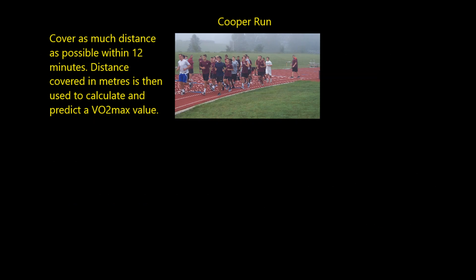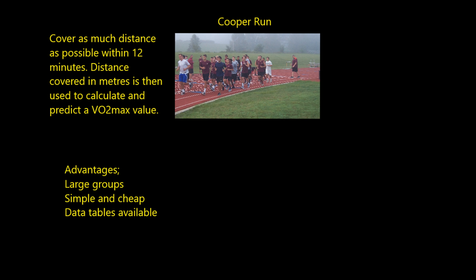Another method — one you're all probably more familiar with — is the Cooper 12-minute run. Often done on a 400-metre athletics track, cones are placed at regular intervals so you can track your distance covered, because you're going to try to cover as much distance as possible in 12 minutes. The distance covered in metres is then used to calculate and predict a VO2max value for you. The big advantages are that this can be done on large groups — direct gas analysis can only do one person at a time. It's very simple and cheap; you don't even need an athletics track. Data tables are available, so you can look up your distance in metres and convert that straight to a VO2max value.